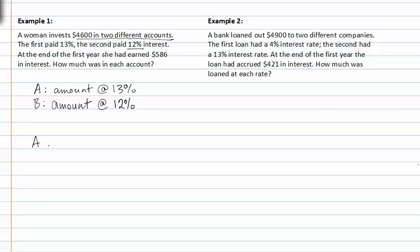At the end of the first year she had earned $586 in interest. So we know that amount A plus amount B equals $4,600 total that she invested. Then we know that she invested the first amount A at 13%, so we multiply 0.13 times that amount, plus 0.12 times B. And she made $586 total.